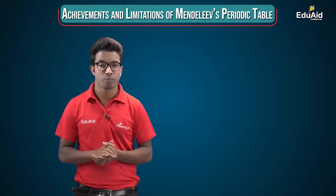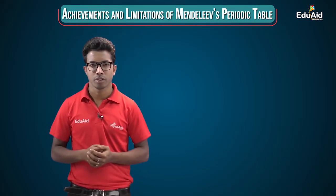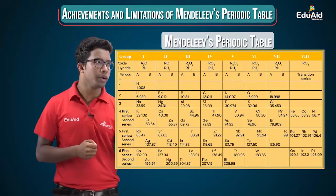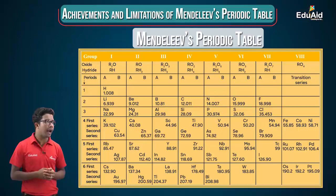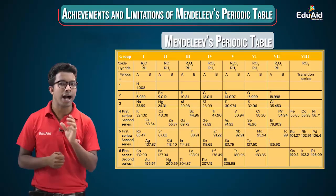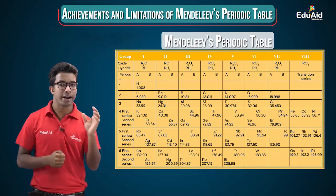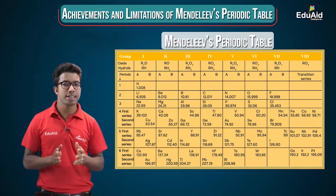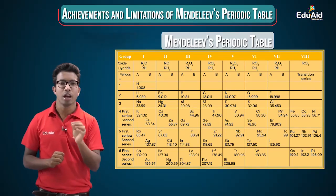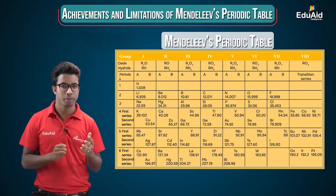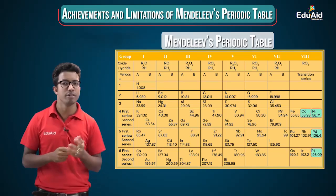Let's start with the achievements of Mendeleev's periodic table. Looking at the table closely, the atomic mass of cobalt is 58.93 and the atomic mass of nickel is 58.71. So clearly, cobalt has a higher atomic mass than nickel, yet it is placed right before nickel, reversing the usual trend of increasing atomic mass.